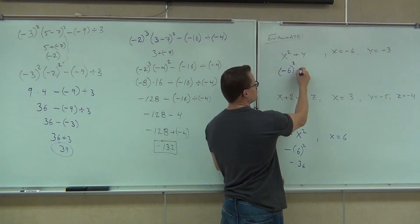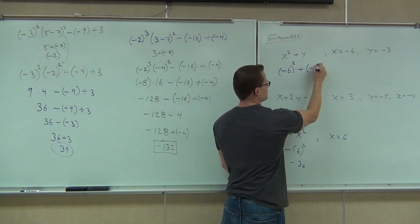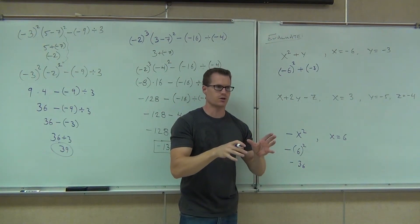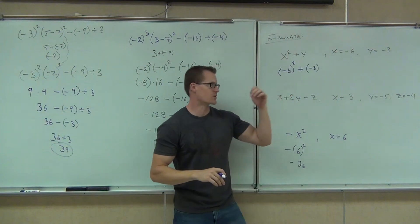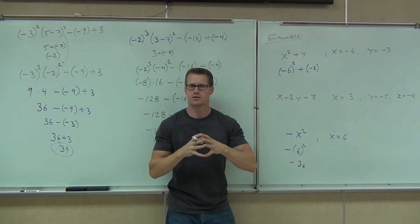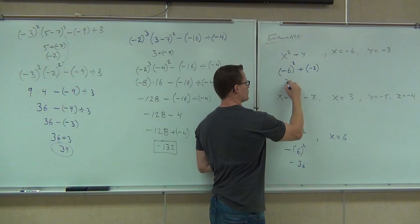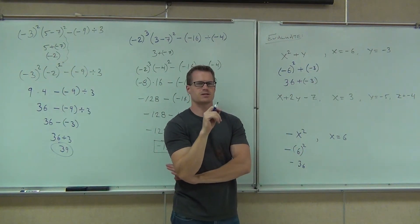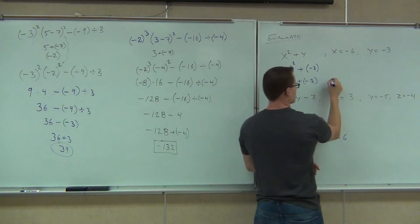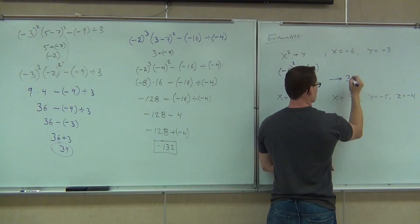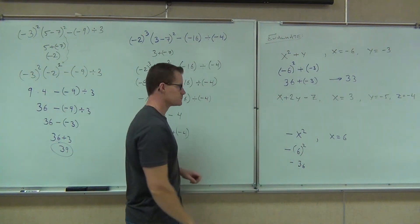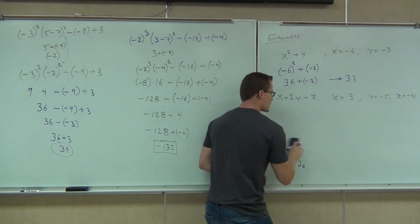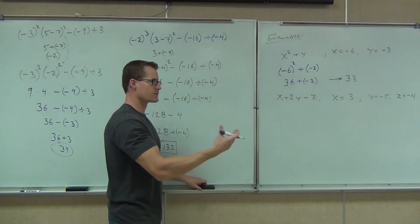So we have negative 6 squared plus y, and y is negative 3. I just want to make sure you saw the x-mode thing — that's a big deal. So we have negative 6 squared. How much is negative 6 squared? 36. Plus negative 3 — 36 plus negative 3. That's a lot of people's biggest problem; they always struggle with that.